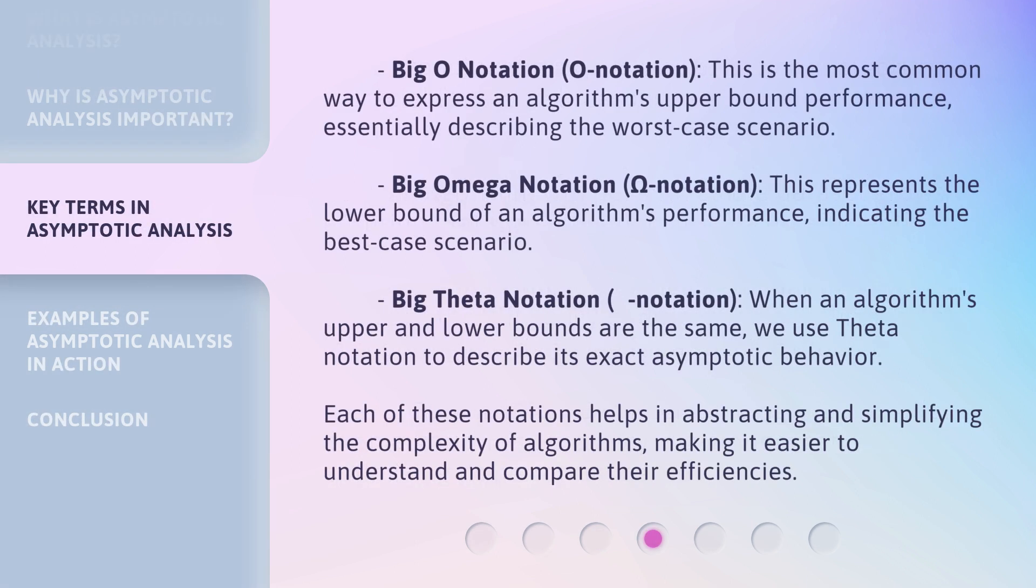Big O notation (O notation): This is the most common way to express an algorithm's upper bound performance, essentially describing the worst-case scenario.